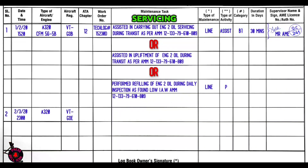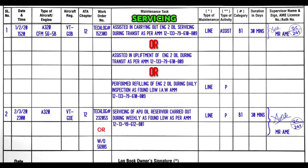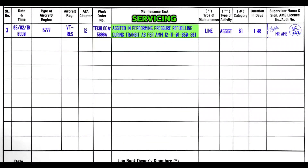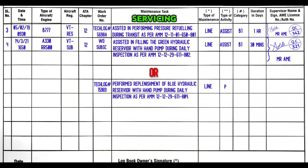Other columns will be as required. Here is another example for servicing on APU — you will mention the APU model number in the engine column, and the tech log number or work order if it is done in weekly. Entry: servicing of APU oil reservoir carried out during weekly as found low as per AMM so and so. For refueling: assisted in performing pressure refueling during transit as per AMM so and so — try to write the same exact words mentioned in the AMM heading. For hydraulic upliftment: assisted in filling green hydraulic reservoir with hand pump during daily inspection as per AMM so and so, or perform replenishment of blue hydraulic reservoir with hand pump during daily inspection as per AMM so and so.